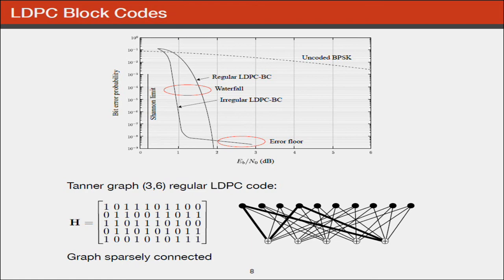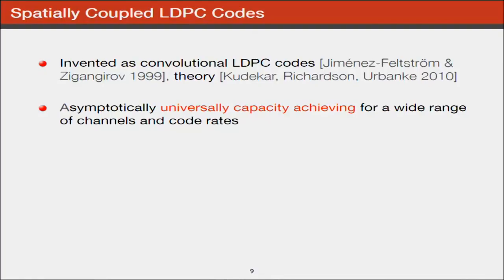This is a very small code. Typically you want to transmit thousands or tens of thousands of bits. The matrix gets very big. It's a sparse matrix because the number of ones in each column and row stays the same. Spatially coupled codes were invented as convolutional LDPC codes in 1999, and then nothing happened for 10 years. This result was completely ignored. The breakthrough came in 2010 when Kudekar and colleagues looked at the theory. This sparked a big boost in research making these codes suitable for 5G.